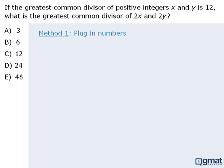Our first approach will be to plug in numbers for x and y and see what happens. If the greatest common divisor of x and y is 12, what are some possible values for x and y?